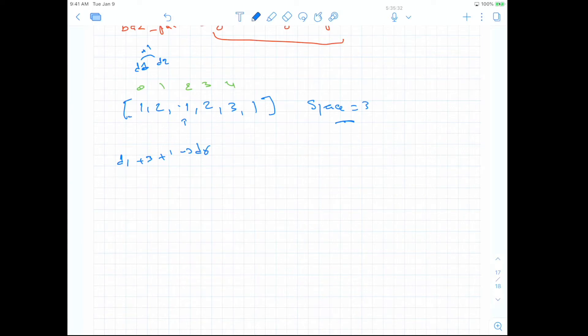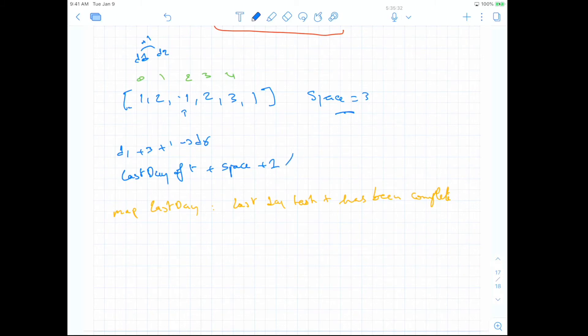So what does this value amounts to? So it's the last day of the same task of T plus space plus one. Now that's the day where we can do it. So what this tells you is that we need to have a map that records the last day of a type that we encountered, right? So we need to have a map, last day, where it's basically last day task T has been completed. Okay? And now we can just get that last day T plus space plus one. Okay?